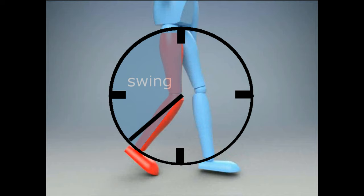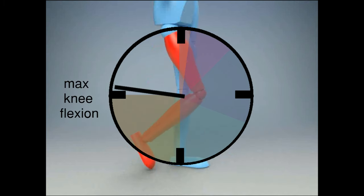Swing can be separated into three phases. Initial swing, which is the first 13% until we reach maximum knee flexion, or in other words, the greatest knee bend.